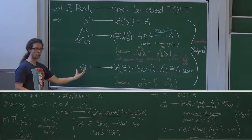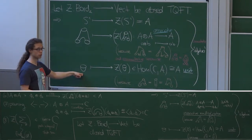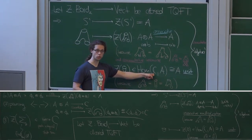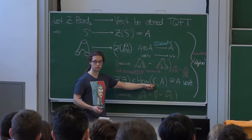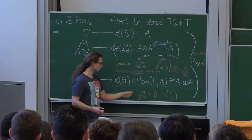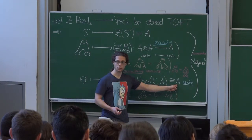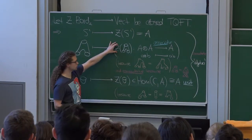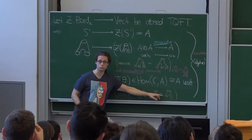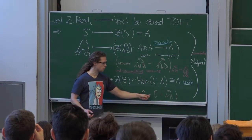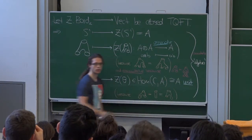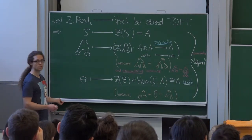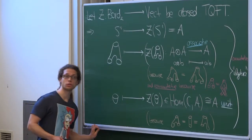Also, from the bordism which is the cup, a morphism from the empty set to a single circle, we get a map from the unit object in Vect, which is the complex vector space C, to A. And this is isomorphic to A, so I will identify this element with an element in here, and it's the unit with respect to this multiplication because these identities hold. This bordism is diffeomorphic to the cylinder. You just shrink in this extra hump into the cylinder.